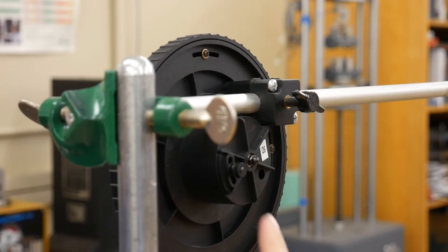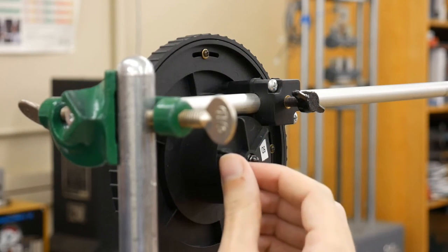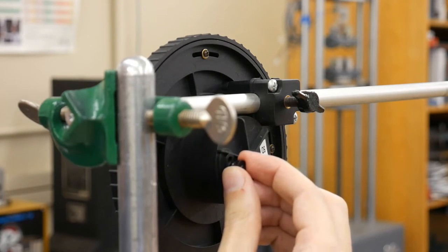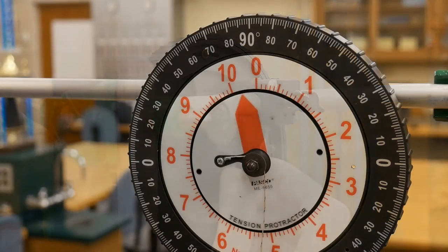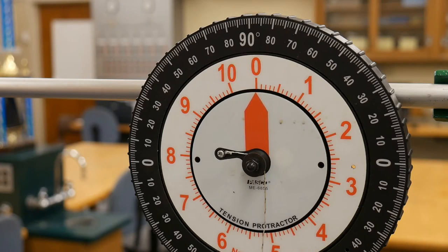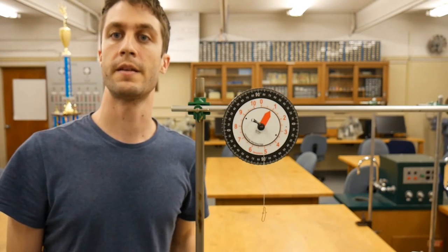In the second part of the experiment, we'll be using these two scales that turn as you pull on them. Now the first thing you should notice is that even though there's no mass hanging from this scale, it's not set to zero, so you're going to need to do that yourself. To do so, find this screw on the back of the scale, and loosen it so that it can freely move up and down. This will adjust the front face of the scale. Adjust the scale until it reads zero, and then tighten the screw again.